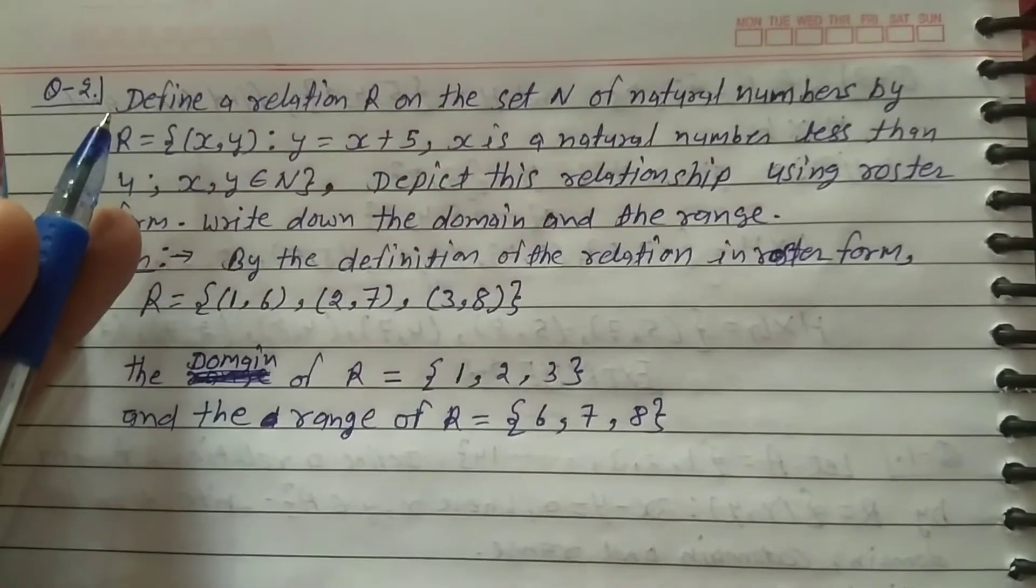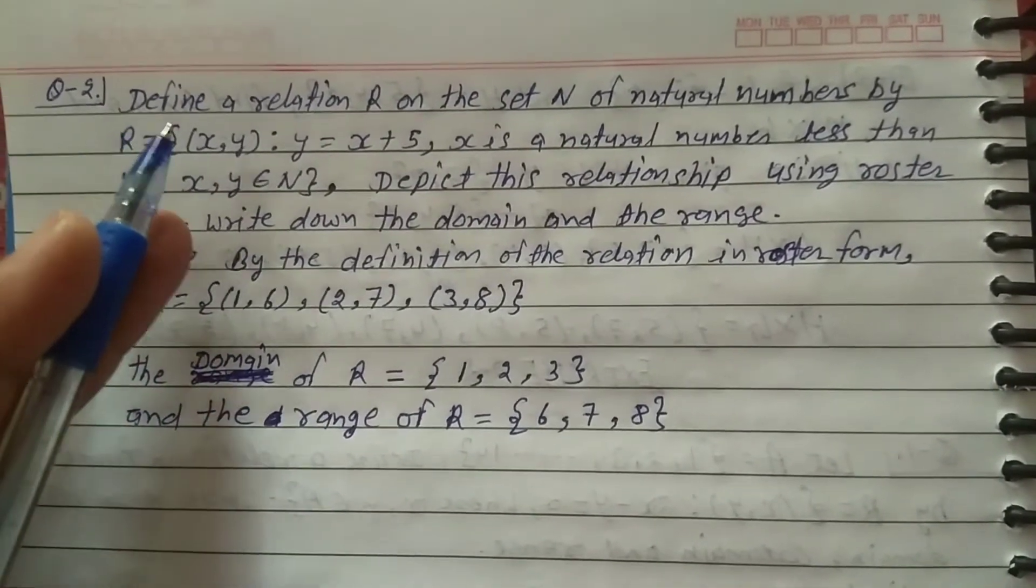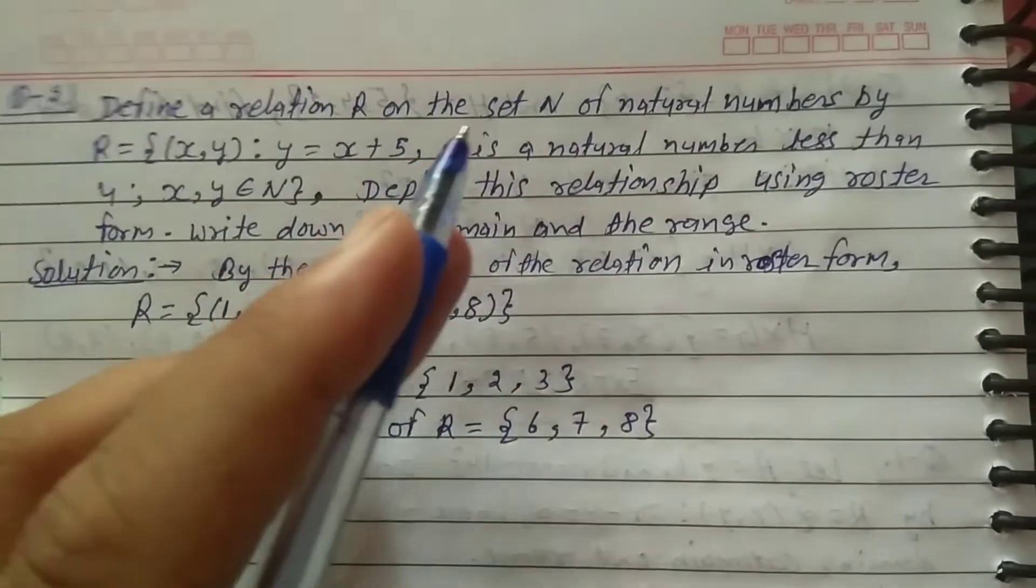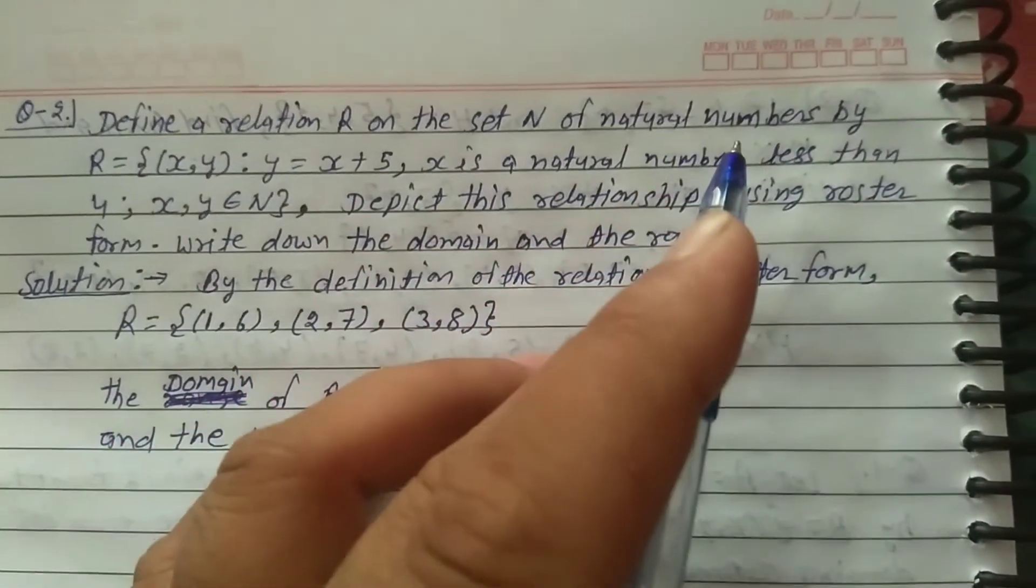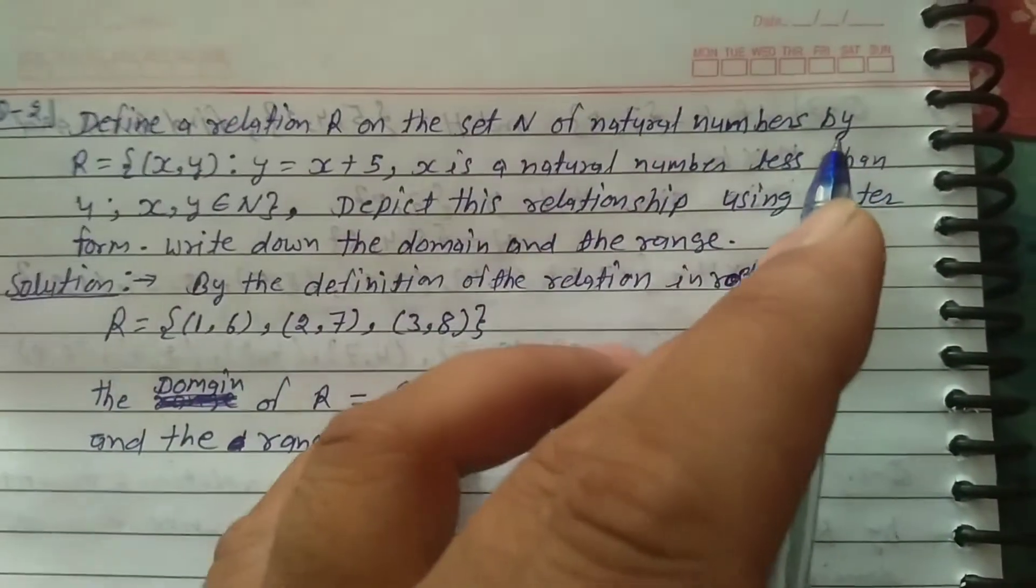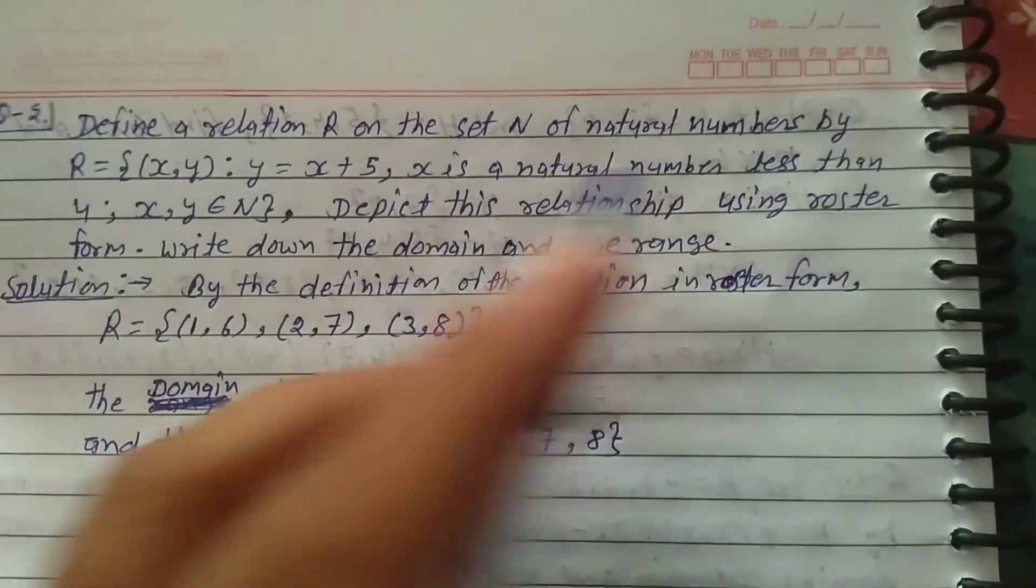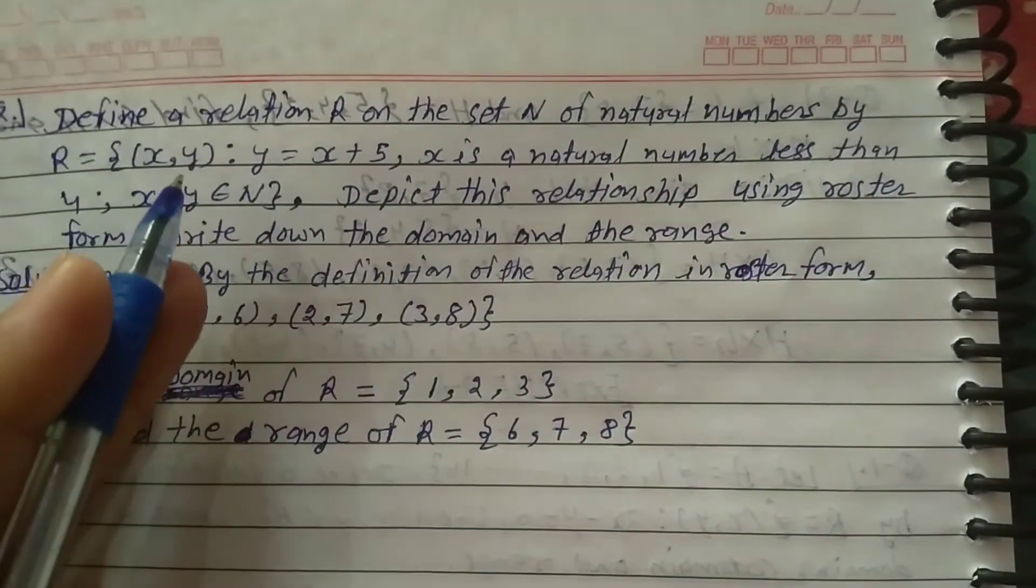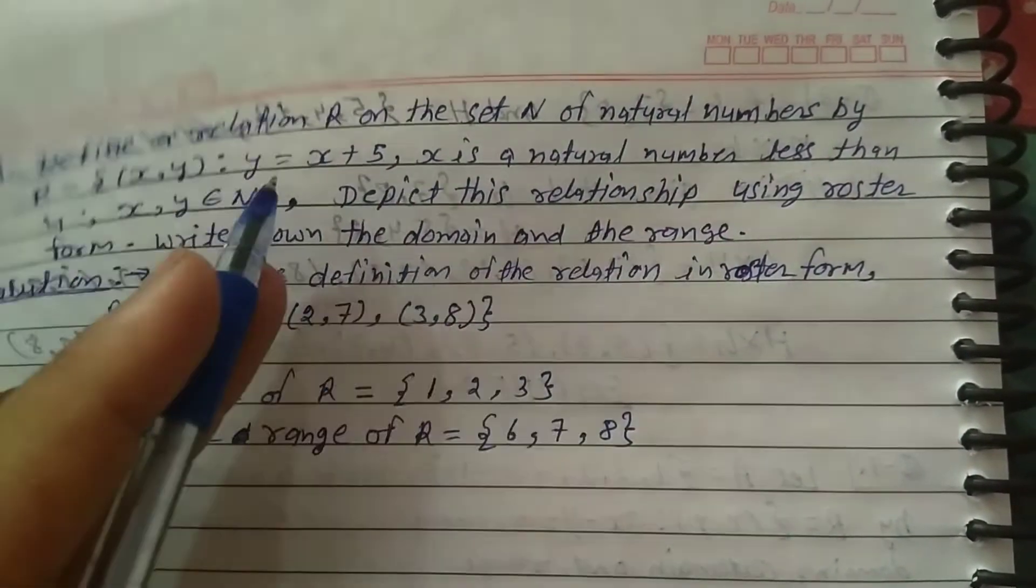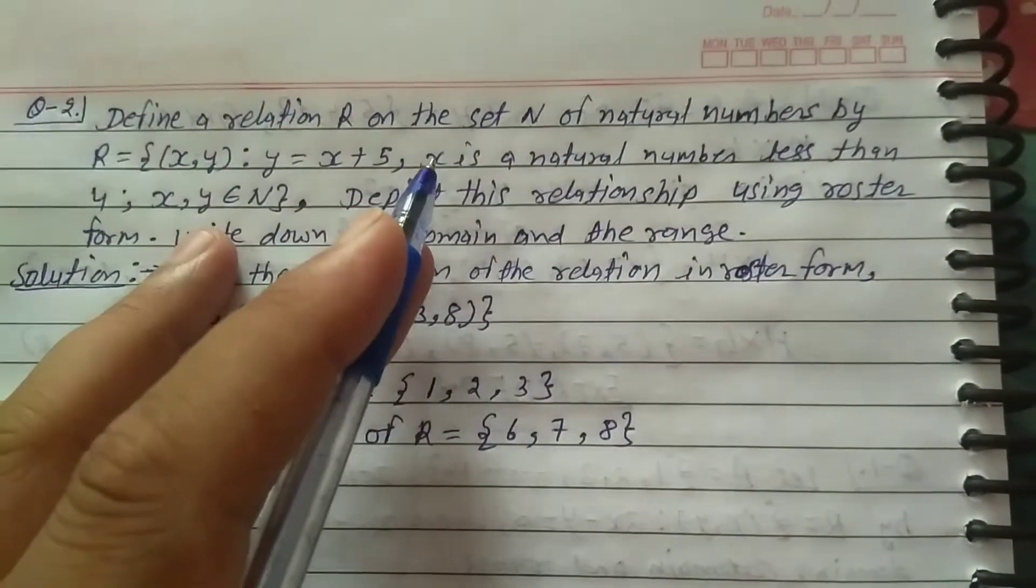Explain question number 2, exercise 2.2, class 11. Find a relation R on the set N of natural numbers by R = {(x, y) : y = x + 5}.